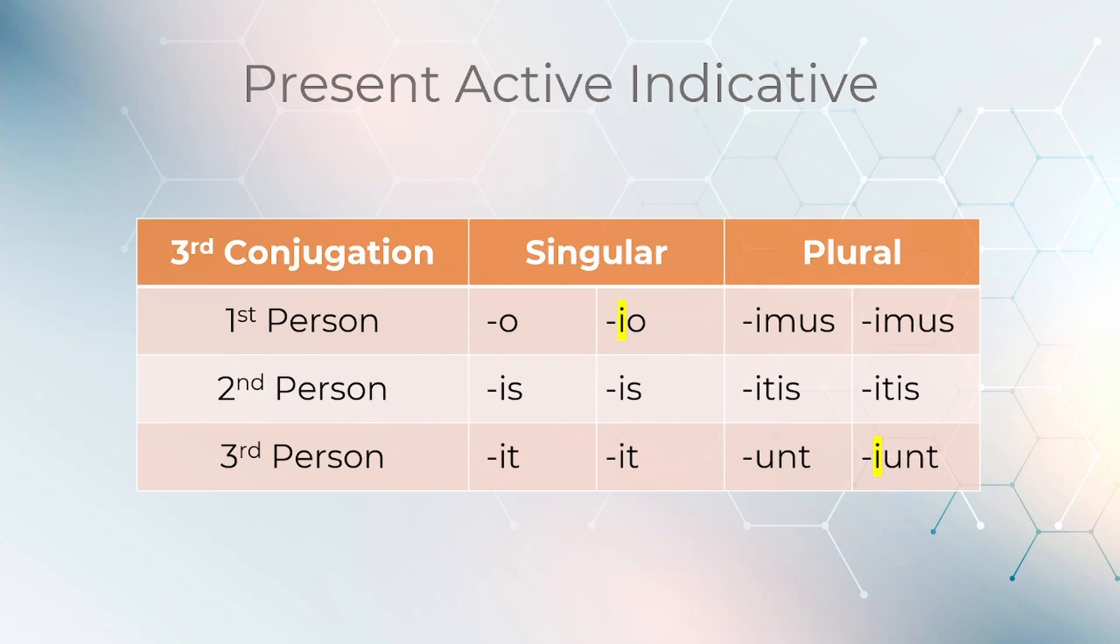Here you can see the corresponding table with the endings for the third conjugation. The first person singular ends in o or io, the second person singular in is, the third person singular in it, the first person plural in imus, the second person plural in itis, and the third person plural in unt or iunt.